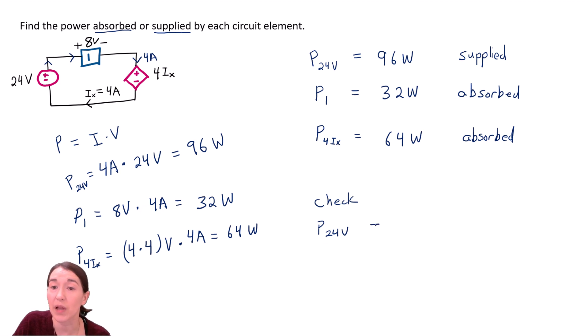We can say P24V. And I'm doing supplied versus absorbed. So I'll write that down here. It has to equal, exactly equal absorbed. So that would be P1 plus P4IX. And those do both add up to 96 watts. So check. Happy face. Oh, that's a weird happy face.